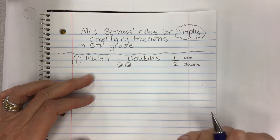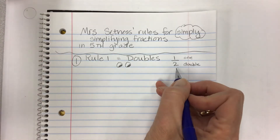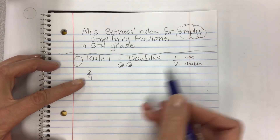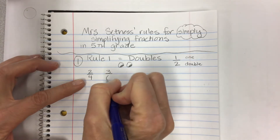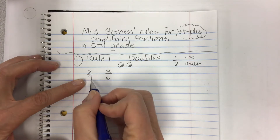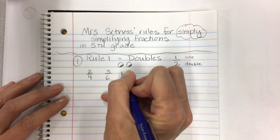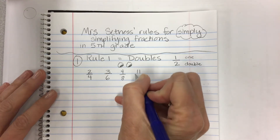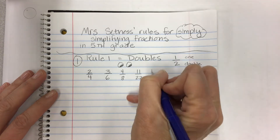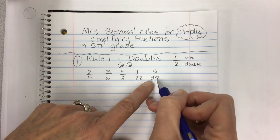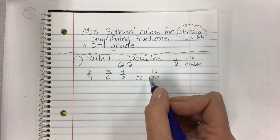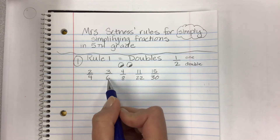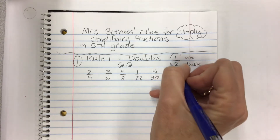Look for doubles — they're everywhere. One half is the lowest or simplest form of a double. A double might be two fourths, because the bottom is doubled; or three sixths, where the top times two equals the bottom. I just call them doubles. You could have eleven twenty-seconds or fifteen thirtieths — fifteen times two is thirty — and these are everywhere in early elementary grades.